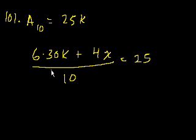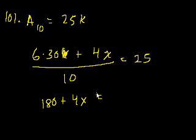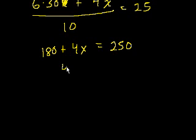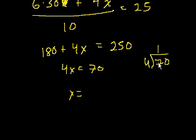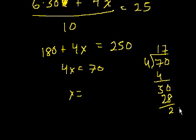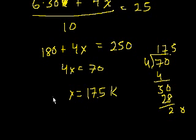So you get 6 times 30, that's 30,000. We know we're dealing in thousands. So 6 times 30 is 180, plus 4x is equal to 10 times 25, is equal to 250. 4x is equal to, what's 250 minus 180? It's 70. And then you have x is equal to, 4 goes into 70, 17.5, and we're dealing with thousands. So $17,500. And that's choice C.